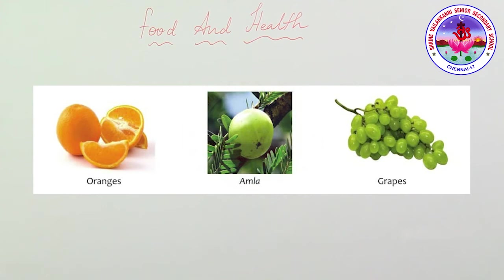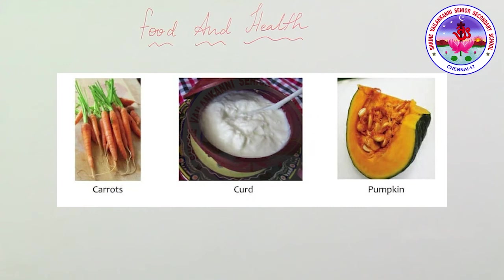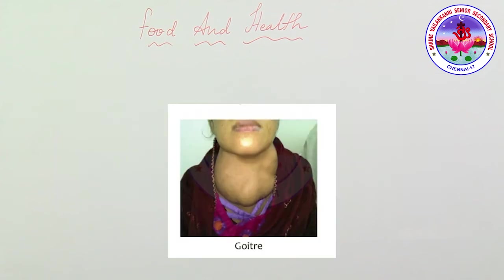Deficiency in iodine causes goiter disease. Iodine deficiency not only leads to goiter but also affects physical and mental development. Goiter causes a swelling in the neck. It can be prevented by adding iodized salt — the most common method of preventing iodine deficiency in our body.